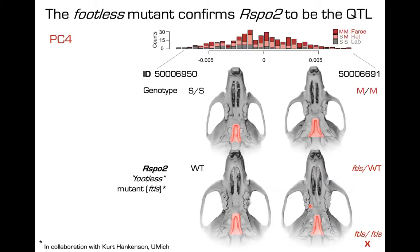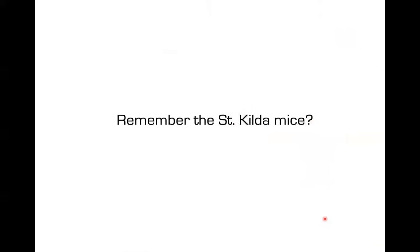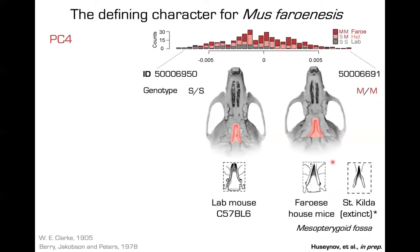We can find genetic associations across the genome with these shape changes. High statistical support peaks indicate genome-wide significant associations. We find a number of strong associations across the genome, and I want to draw attention to a peak on chromosome 4. Zooming in, this particular PC affects the zygomatic arches and some landmarks on the bottom of the skull. In the peak region, there is an R-spondin 2 gene — an activator for the canonical Wnt signaling pathway.